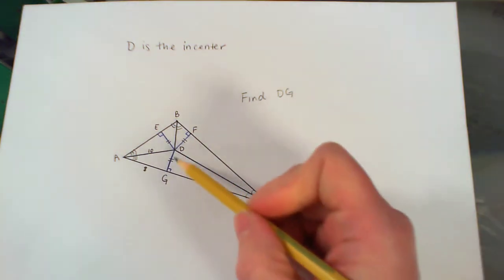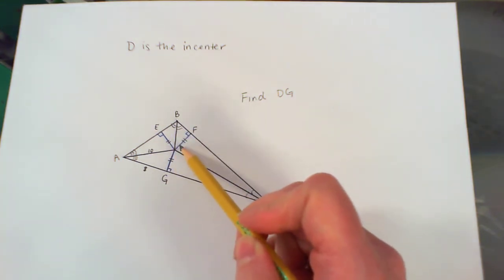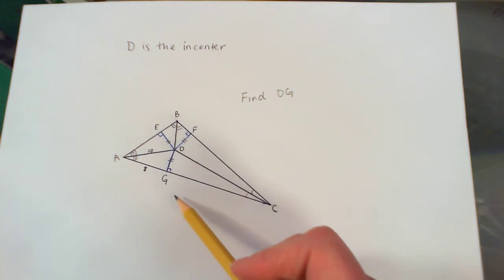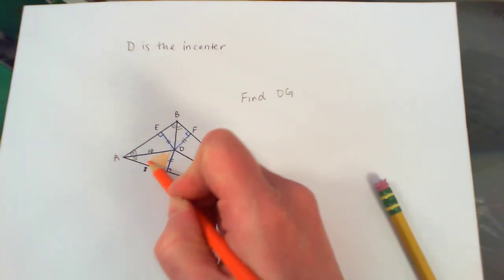Now there's no marking on DG, I just know that it's congruent to DE and congruent to DF. In order to do this, I'm going to have to use the Pythagorean theorem. The Pythagorean theorem applies to right triangles, so I'm going to use this right triangle right here.